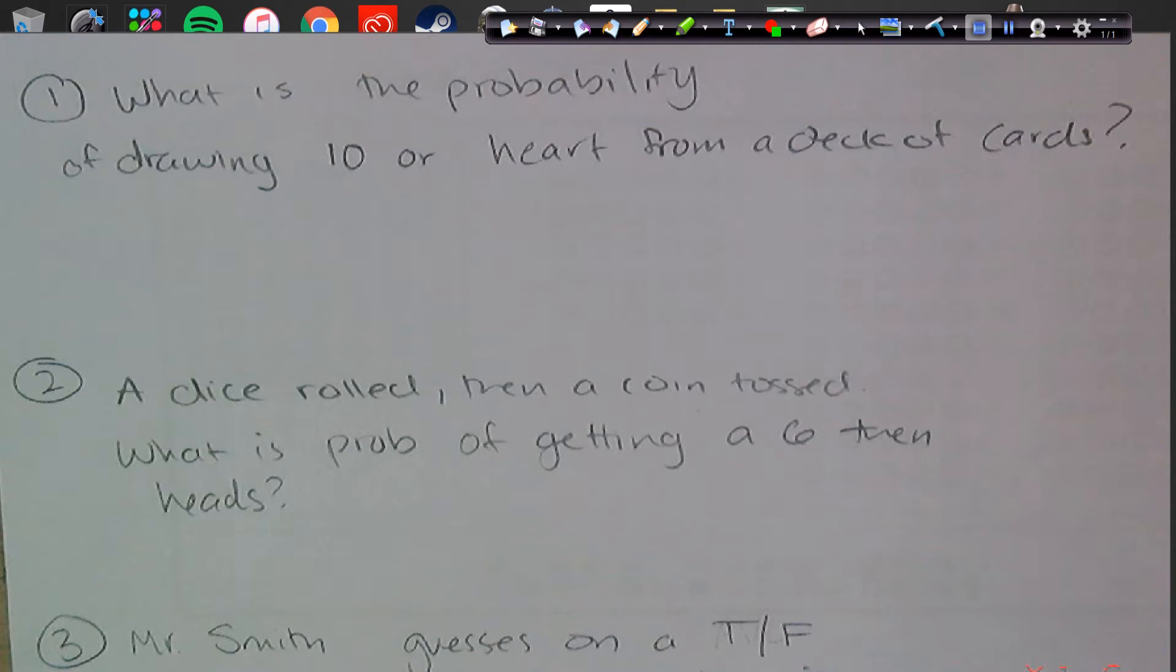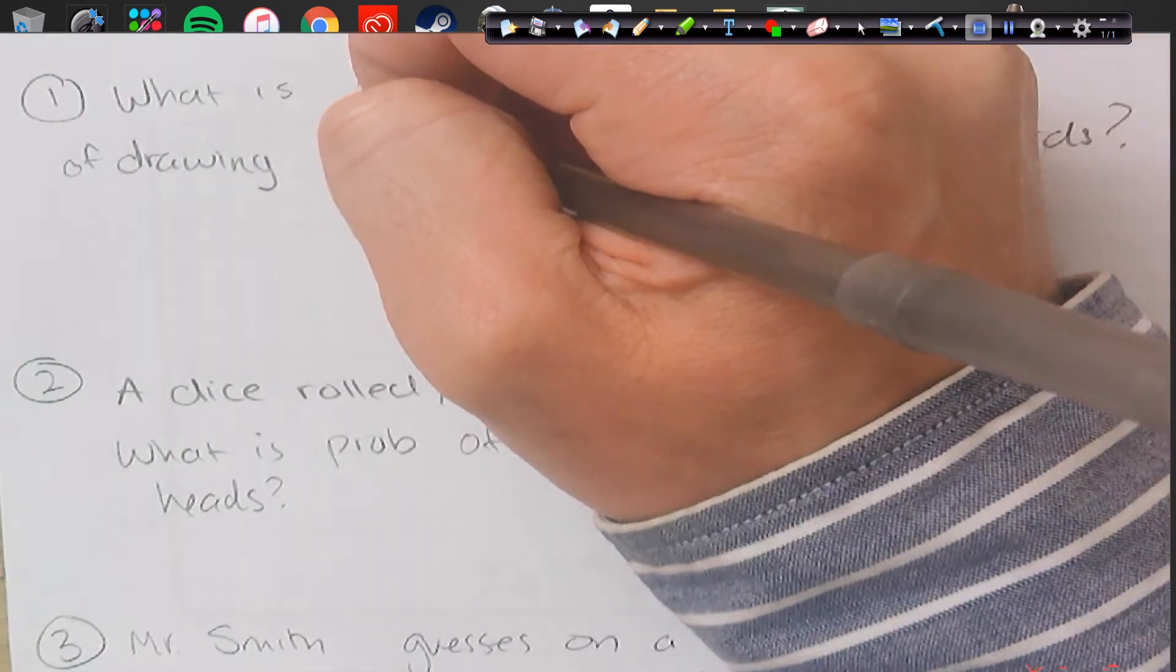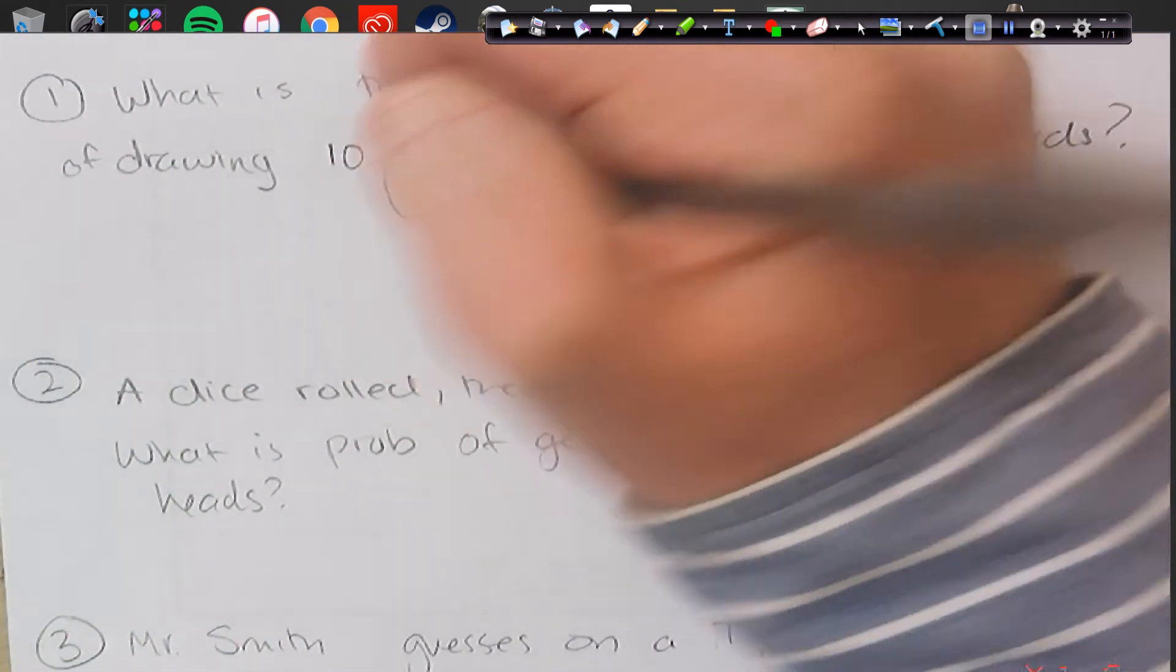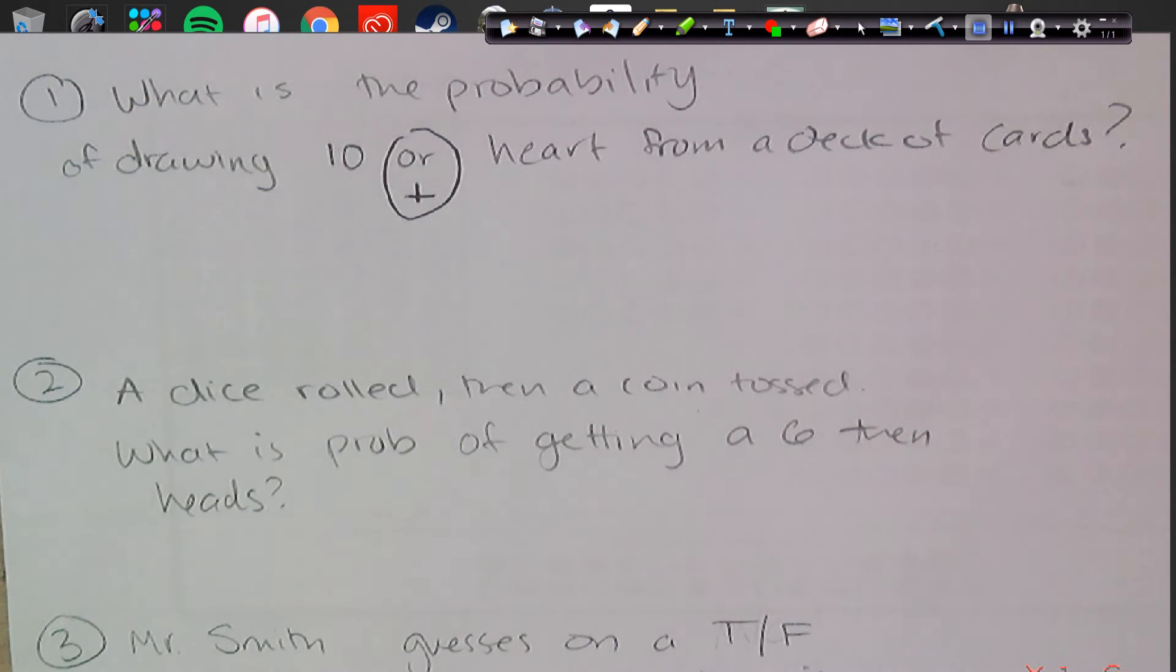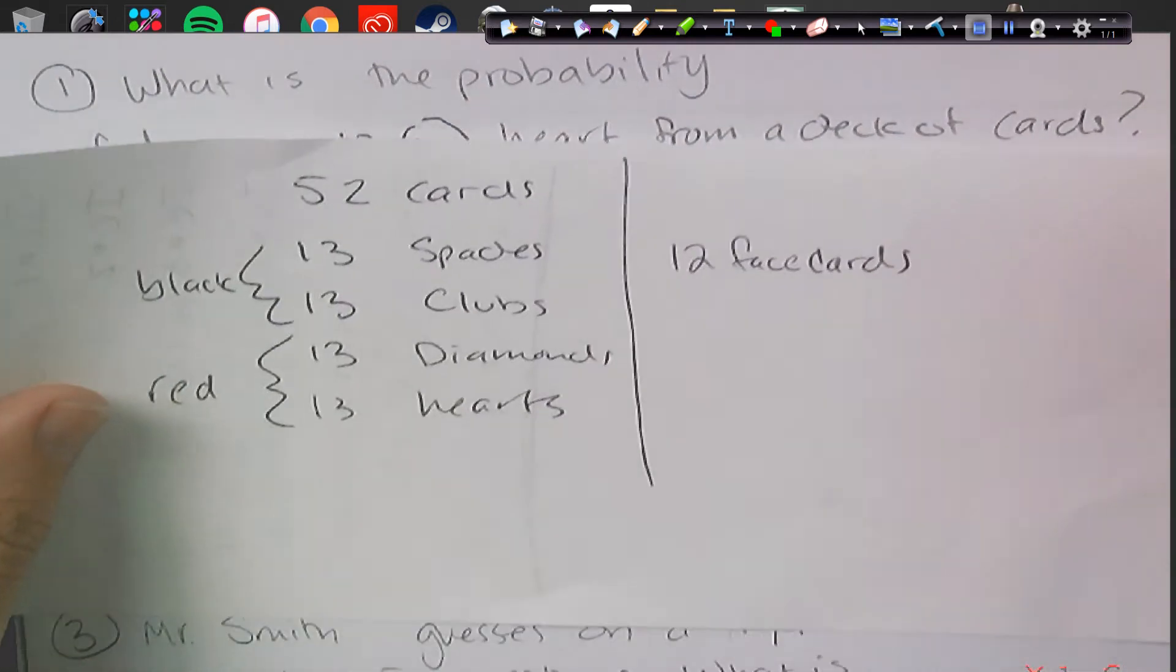What is the probability of drawing a 10 or a heart from a deck of cards? Well, first keyword is or. Or means to add. So we've got to think about a deck of cards, and if you guys know about a deck of cards, let's go ahead and review that real quick.